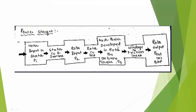From rotor input P2, subtract rotor copper losses to get the mechanical power developed in the rotor, PM — this is called gross torque. Then from PM, subtract windage and friction losses to get the total rotor output power P_output (also called BHP or brake horsepower).